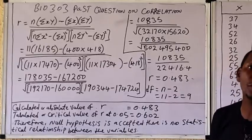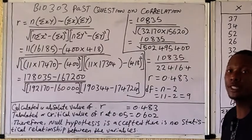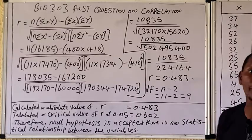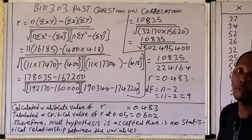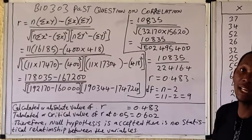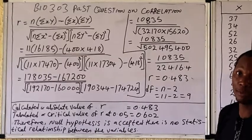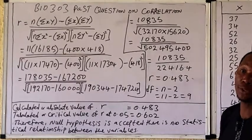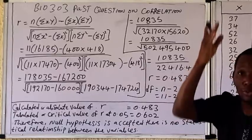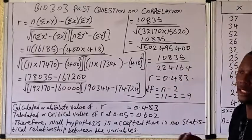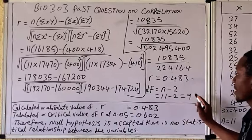After obtaining r, find your degree of freedom. The degree of freedom is n minus 2. Since n is 11, the degree of freedom is 11 − 2 = 9.